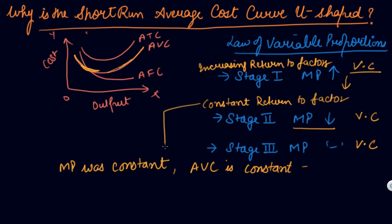Constant return to factor is the stage when marginal product is constant and average variable cost is constant. Then comes decreasing return to factor: if you employ more and more variable factors, variable cost rises because you don't have enough fixed factors — no extra machines, no extra space — to properly utilize them. So you start investing in fixed factors, buying new machines and buildings to increase output, but this makes fixed cost inefficient and average variable cost starts increasing.